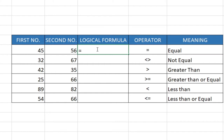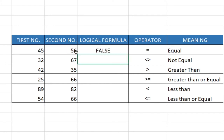Let's try the first one — equal to. Any time you want to use a formula, we first bring our equals sign, then we select this cell, and then we say equal to again because we want to compare the two — if they are equal, since this is a comparative operator. We select the second cell and hit Enter, and it's saying false. So 45 and 56 are not equal, so we get false for that.